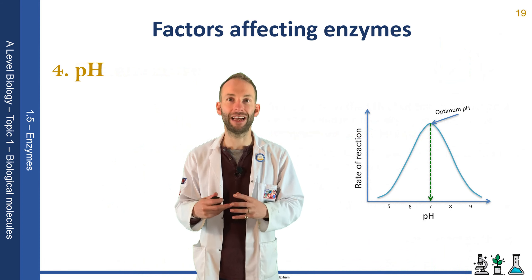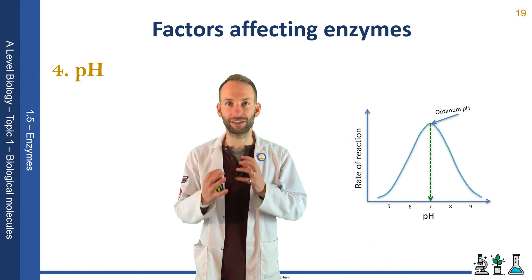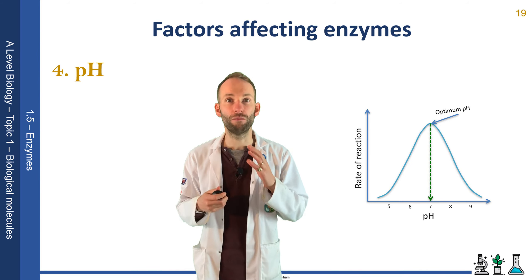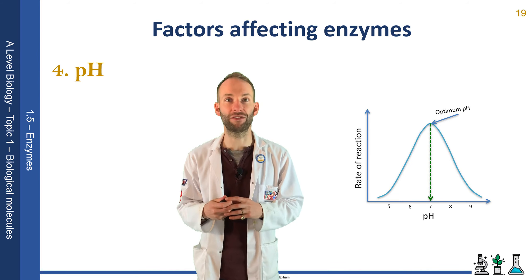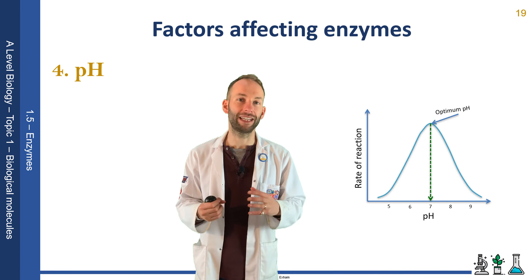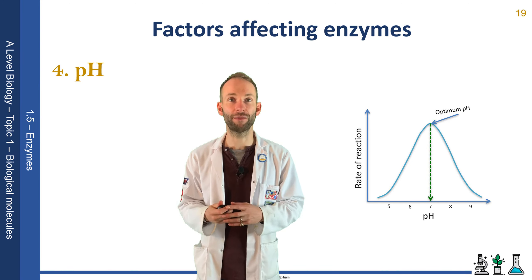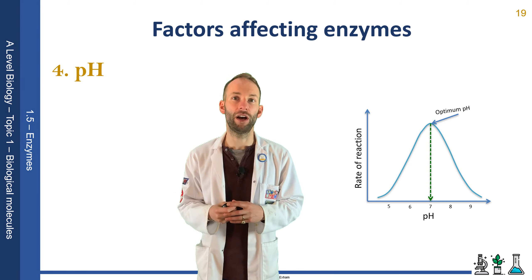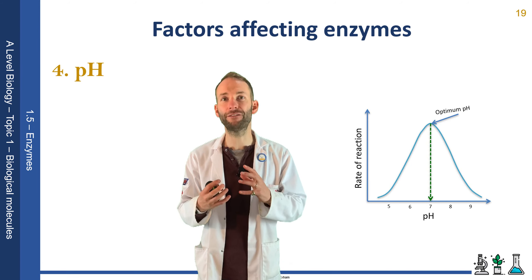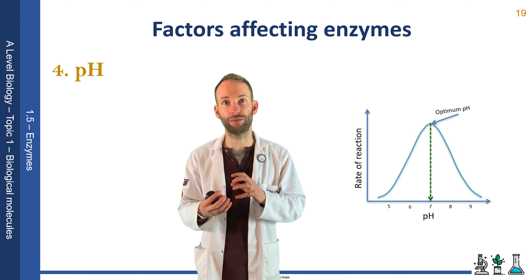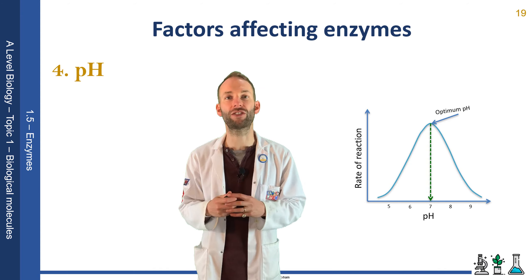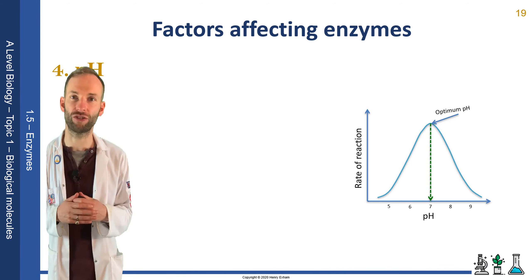pH also affects the bonding that controls the tertiary and quaternary structure of a protein. Most enzymes have an optimum pH of around 7, although some can work at pH 2, like those in the stomach, and some work higher up the pH scale. pH particularly affects the formation of disulfide and hydrogen bonds, so if you change the pH outside the optimum, you change the enzyme's structure and it becomes denatured.